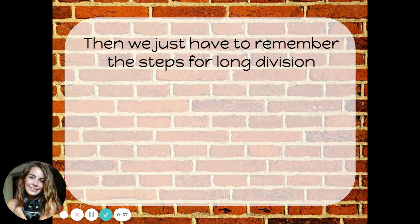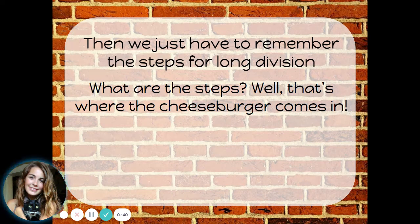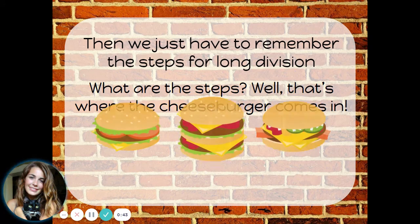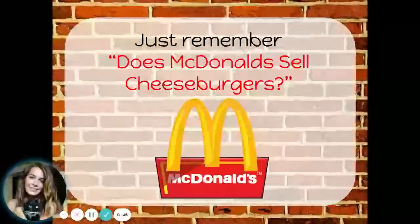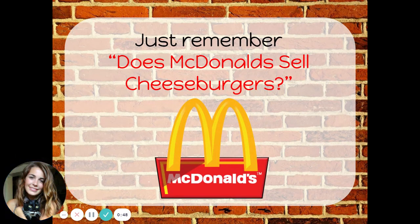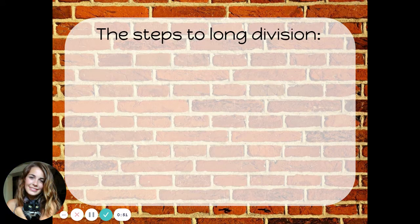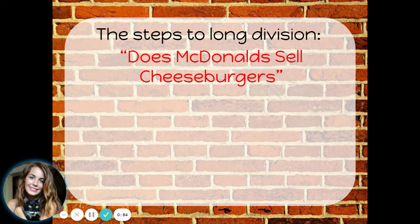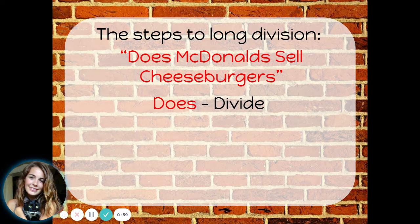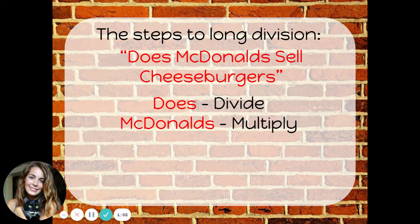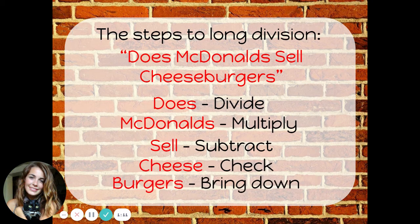Then we just have to remember the steps for long division. That's where the cheeseburger comes in. Just remember: does McDonald's sell cheeseburgers? We use that phrase to help us remember the steps. Does stands for divide. McDonald's stands for multiply. Sell stands for subtract. Cheese stands for check. And burger stands for bring down. These are the steps we use when we do long division.